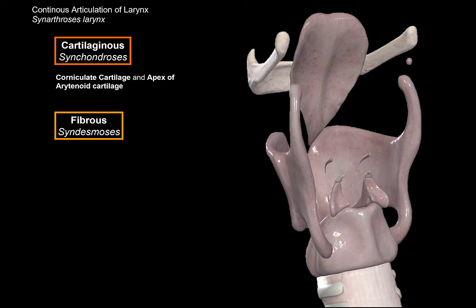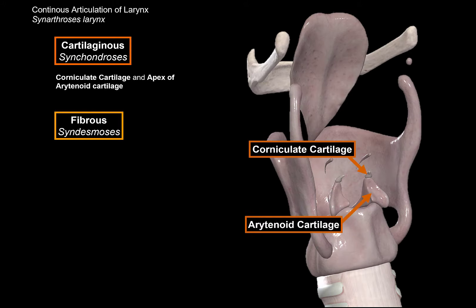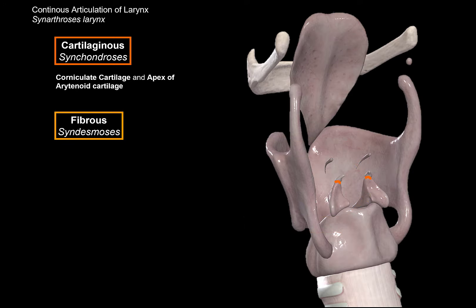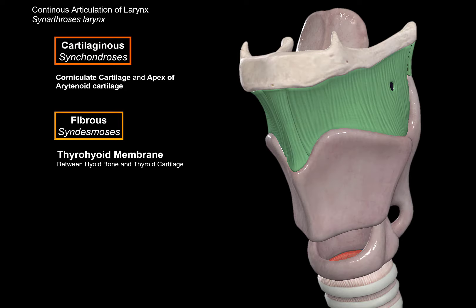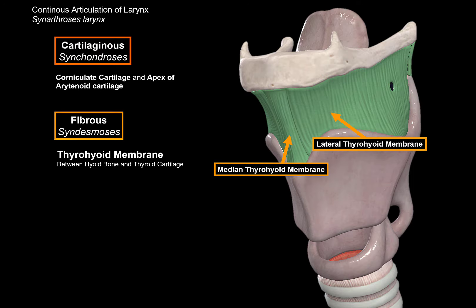Here is the larynx, here is the corniculate cartilage, and here is the arytenoid cartilage. Here is the cartilaginous connection — it's a very dense connection, nearly a bony joint. For the fibrous connections, we have the thyrohyoid membrane, which is a membrane between the thyroid cartilage and the hyoid bone. Theoretically it has two parts: a median thyrohyoid membrane and a lateral thyrohyoid membrane.